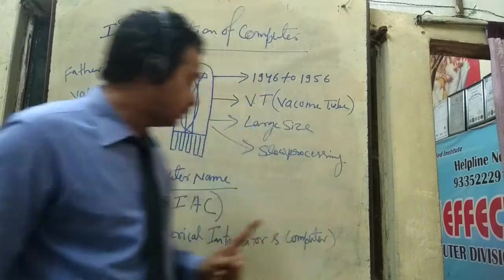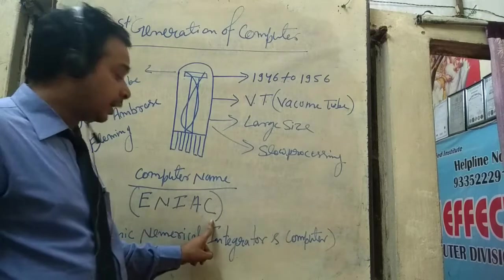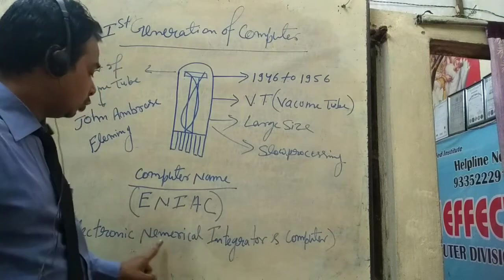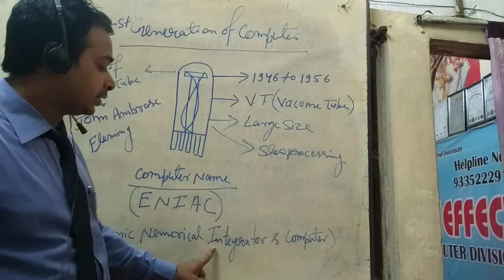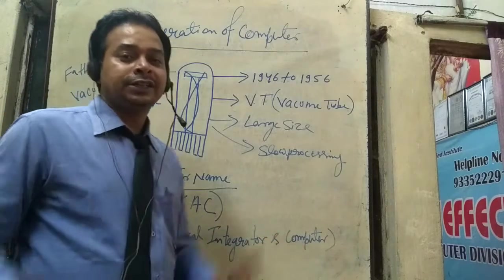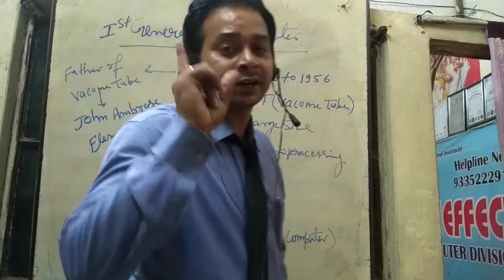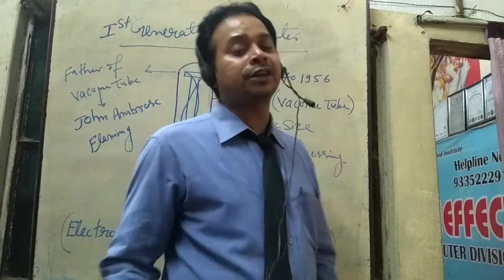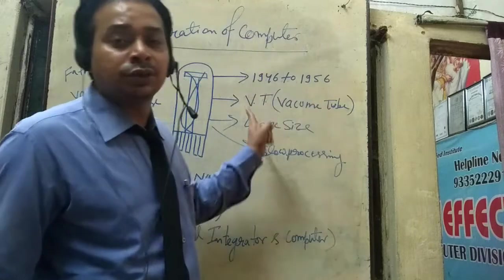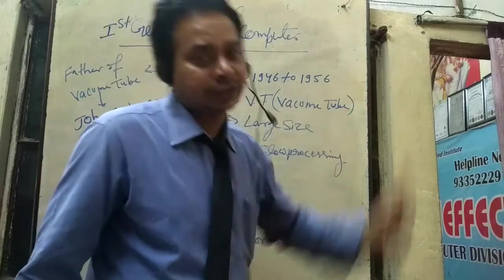This computer was called ENIAC. What was it? ENIAC. It was called Electronic Numerical Integrated and Computer. This is the first electronic computer, which is called the First Generation of Computer.